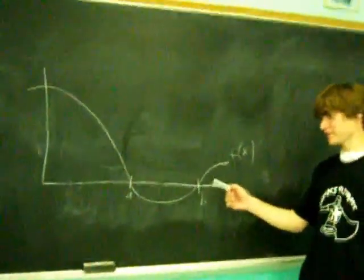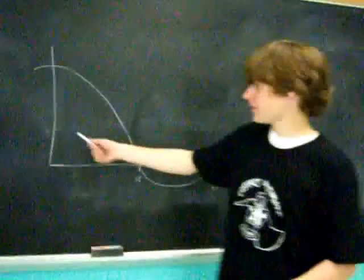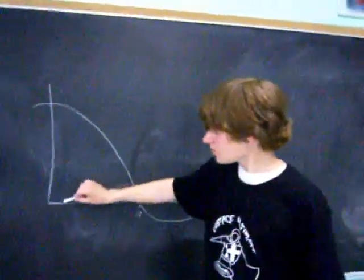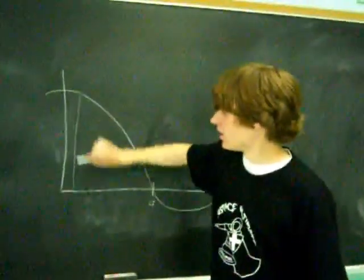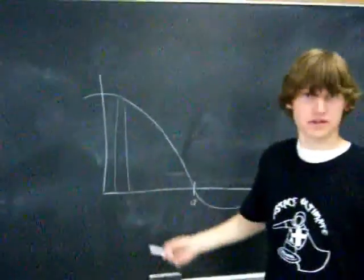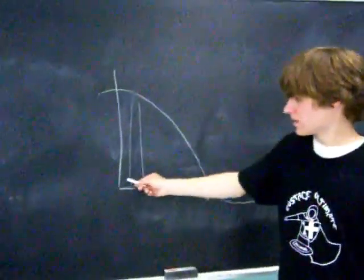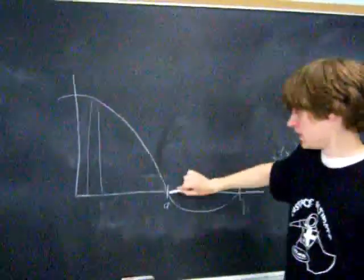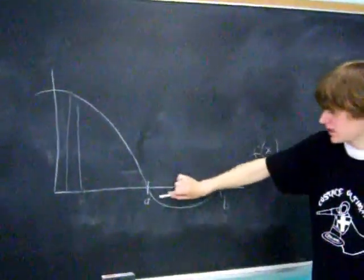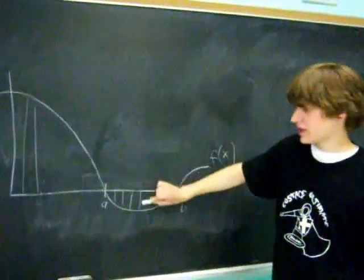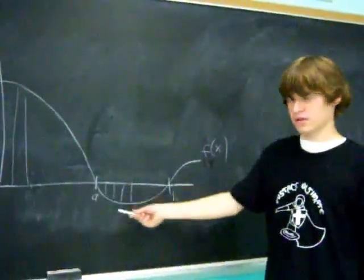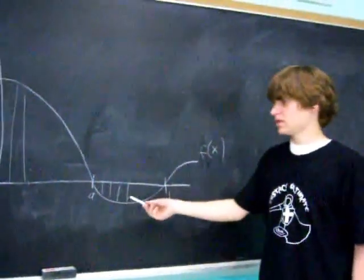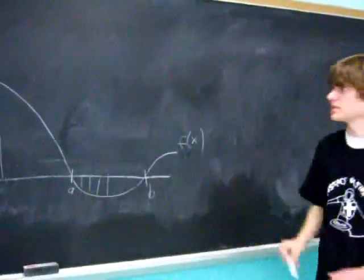We have a function f of x. Wherever f of x is positive, the antiderivative of f of x is increasing, because at each point it's getting more and more area as it goes. Until it reaches a point which becomes negative, then more area is subtracted from the negative portion of the graph, and at that point it's decreasing.